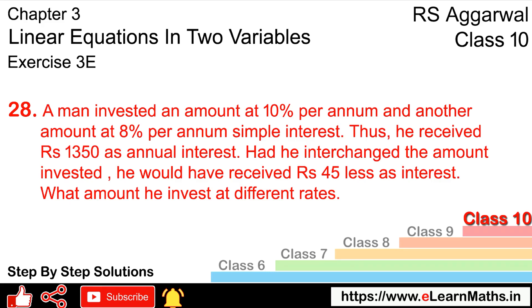Let's do question number 28 of Exercise 3E - linear equations in 2 variables. Question 28: A man invested an amount at 10% per annum and another amount at 8% per annum simple interest. He received ₹1350 as annual interest. Had he interchanged the amounts invested, he would have received ₹45 less as interest. What amounts did he invest at different rates?